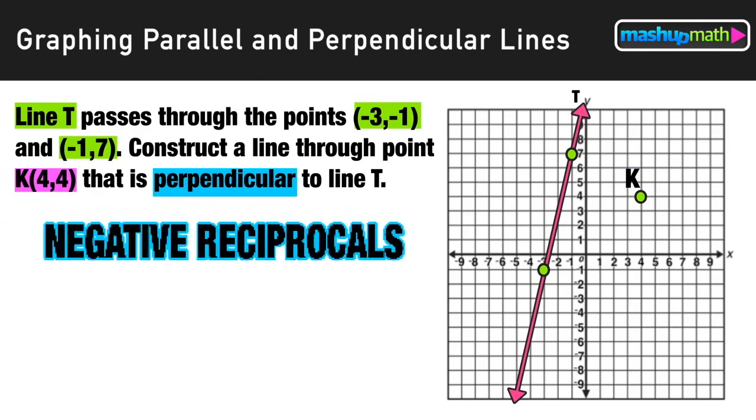So when we see perpendicular we need to think negative reciprocal slopes. So first we need the slope of line t. Let's go ahead and count the rise over run. Moving from point to point we're moving up eight units and to the right two units. Now we should recognize that eight over two can be reduced to just four, since eight divided by two is four, but we're going to write it as four over one because we want to think of slope as rise over run.